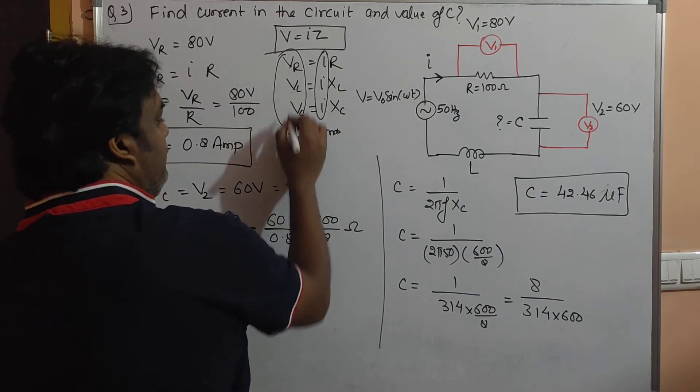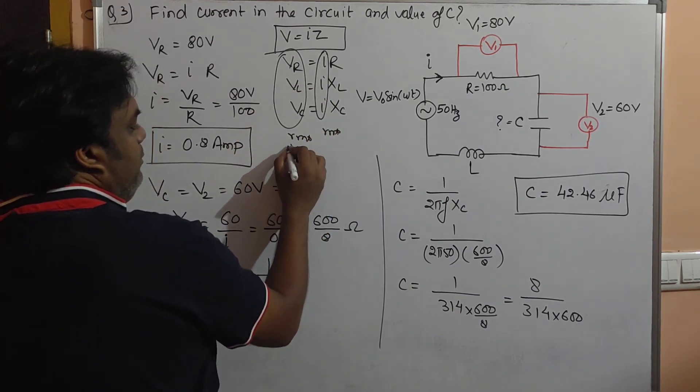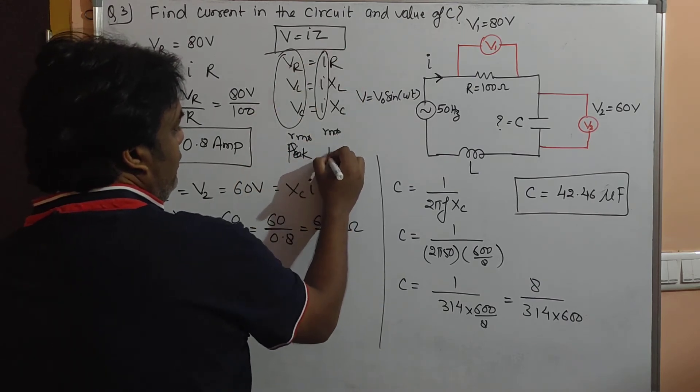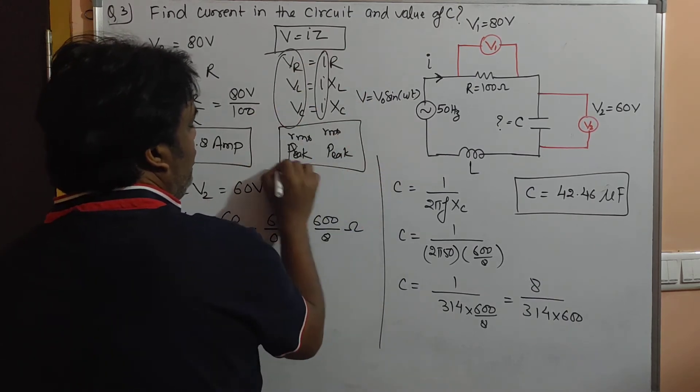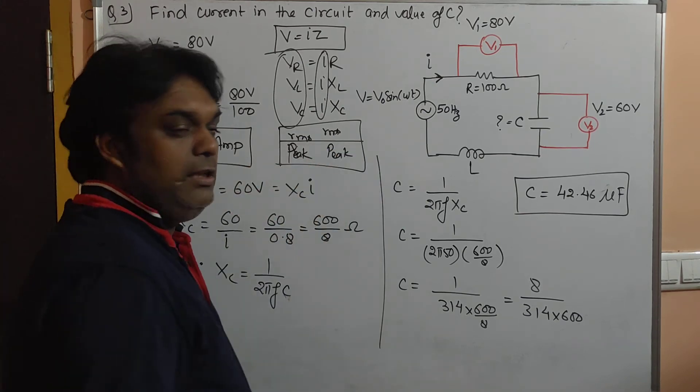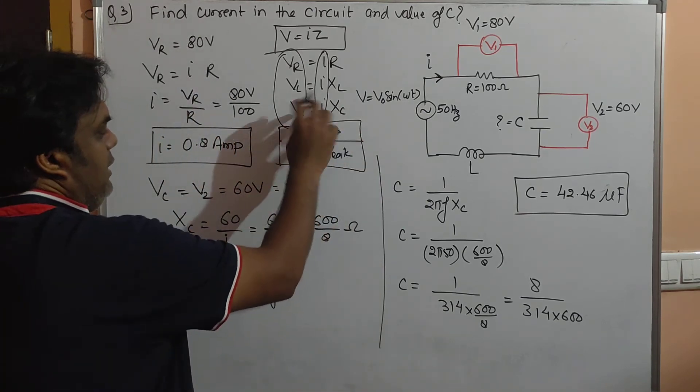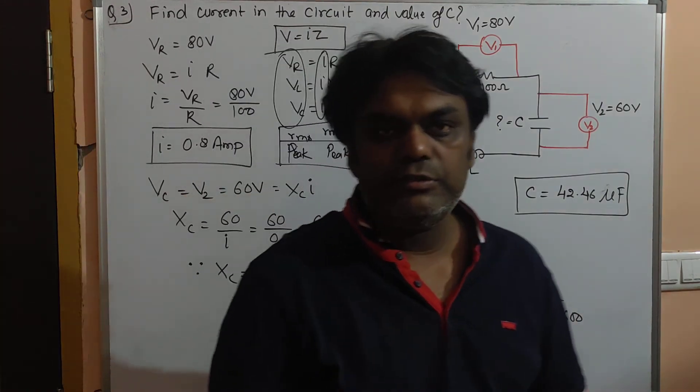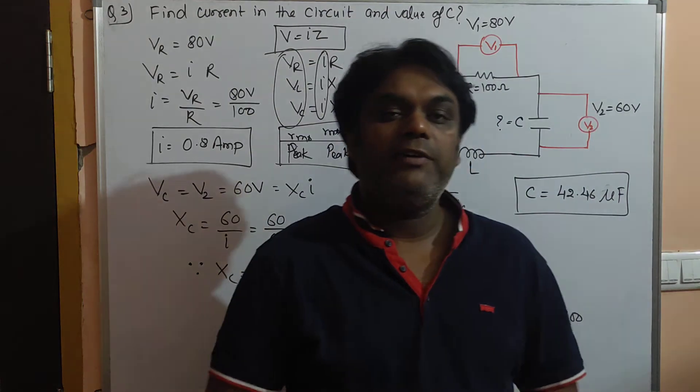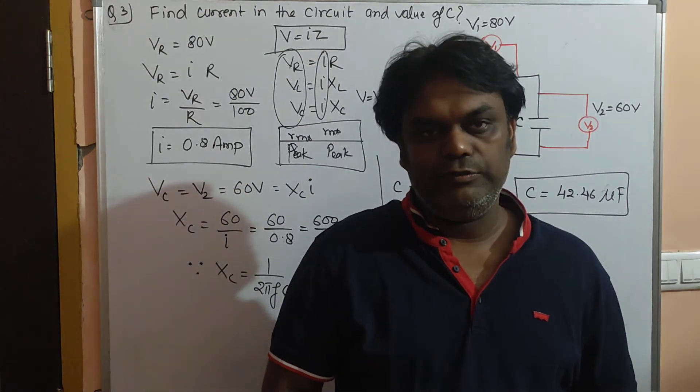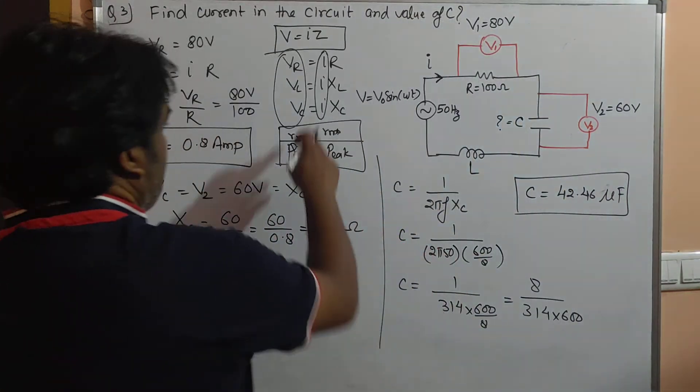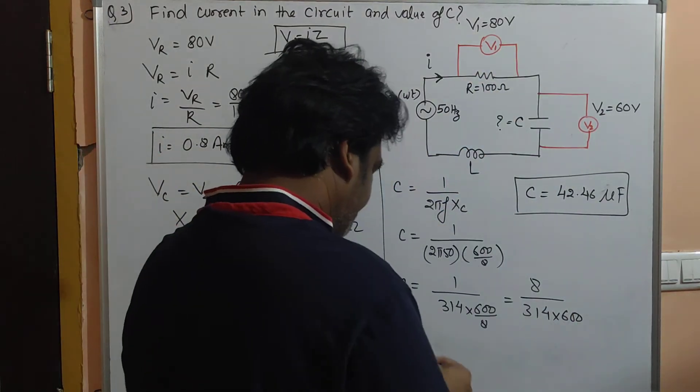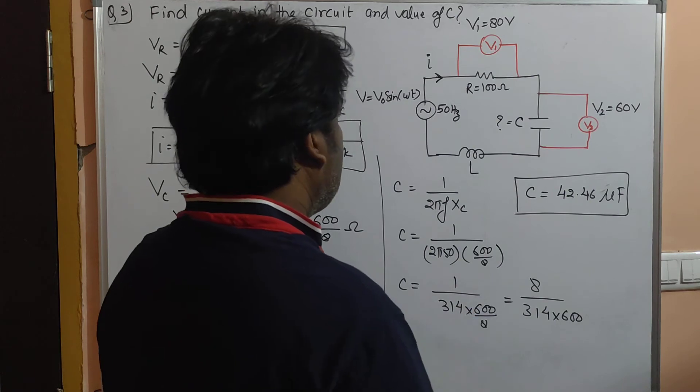If these voltages are RMS values, then current will also be RMS values. If voltages are peak values, then current will also be peak values. We will get corresponding quantities with respect to corresponding values. You all know the formula for Z, which you can use every time.